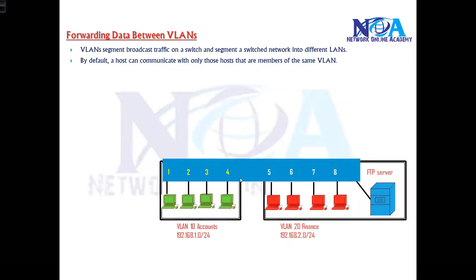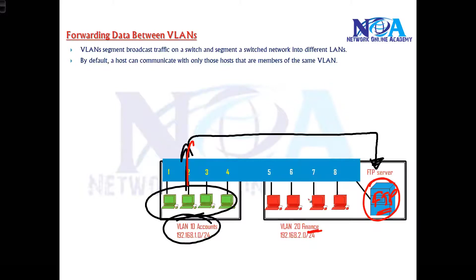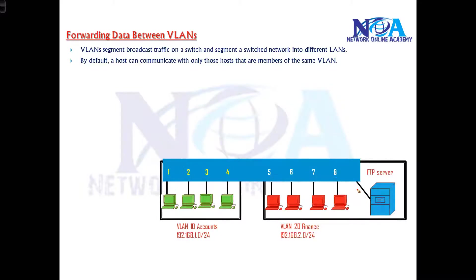By default, the host in one VLAN will not be able to communicate with another VLAN — they can only communicate within the same VLAN. But what if I want communication between VLANs? For example, the users of the Accounts department belonging to the 192.168.1.x subnet want to communicate with an FTP server on VLAN 20, the Finance Department. I want users of both Finance and Accounts to be able to access that FTP server. The Finance users can still access it because they are on the same VLAN and the same subnet.